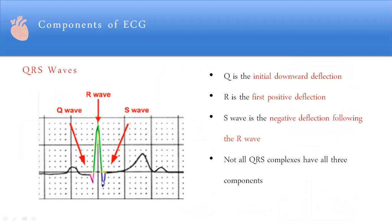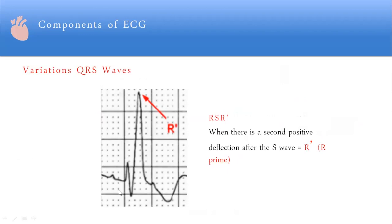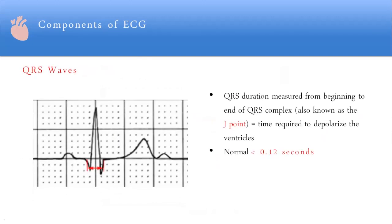The QRS complex consists of Q, R, and S waves. Q is the first negative deflection, R is the first positive deflection, and S is the negative deflection following R. R prime (R') is a second positive deflection. Our QRS interval should be narrow; a wide S wave can indicate bundle branch involvement.